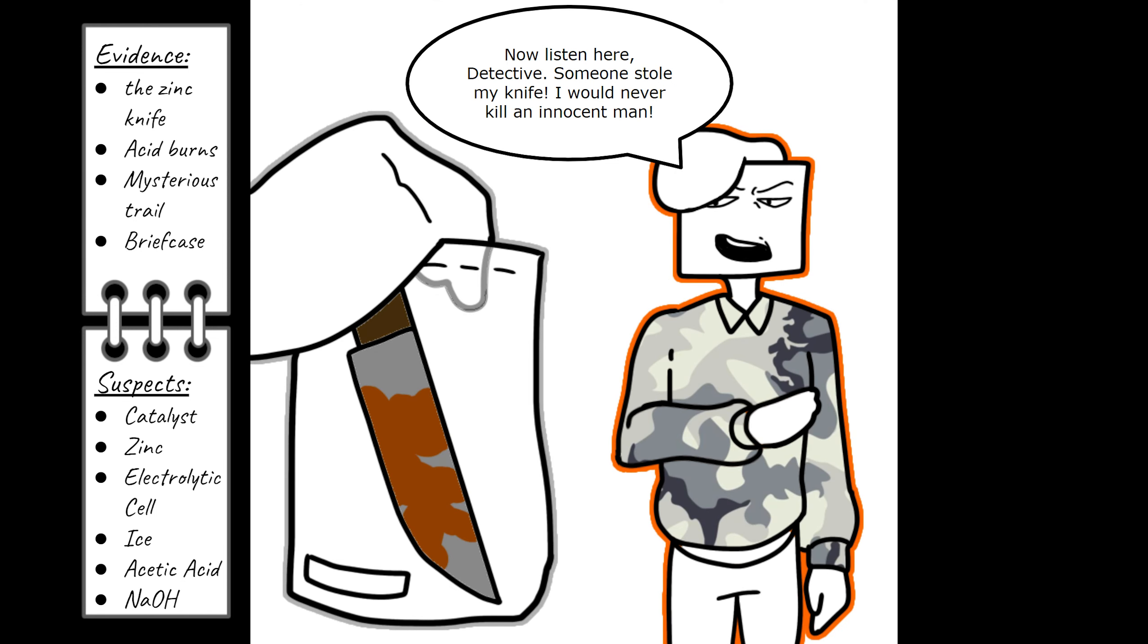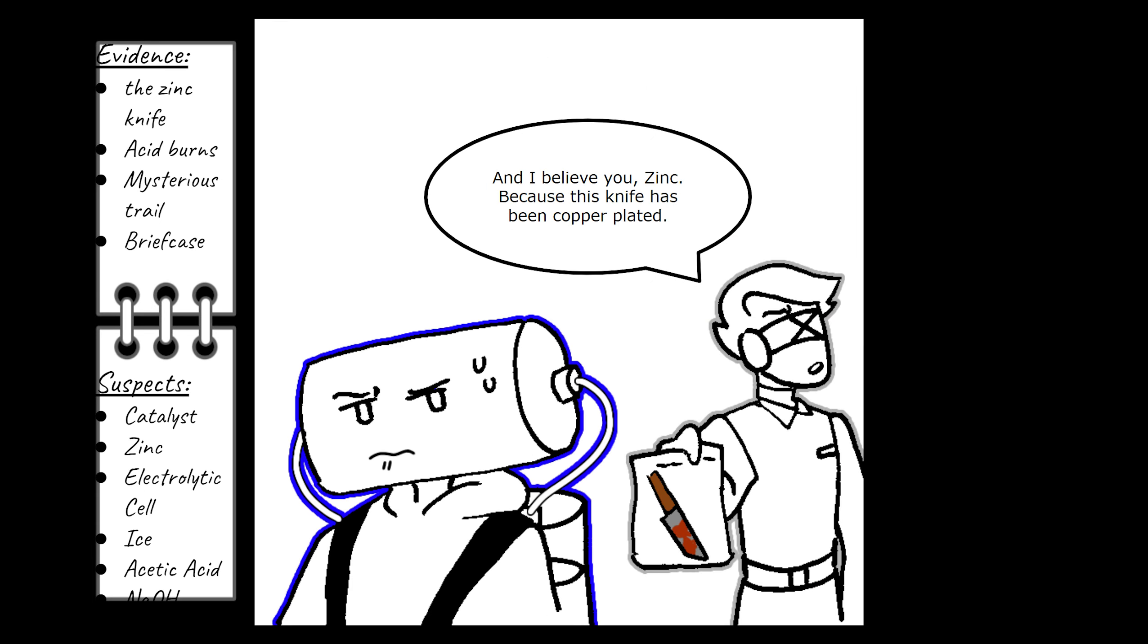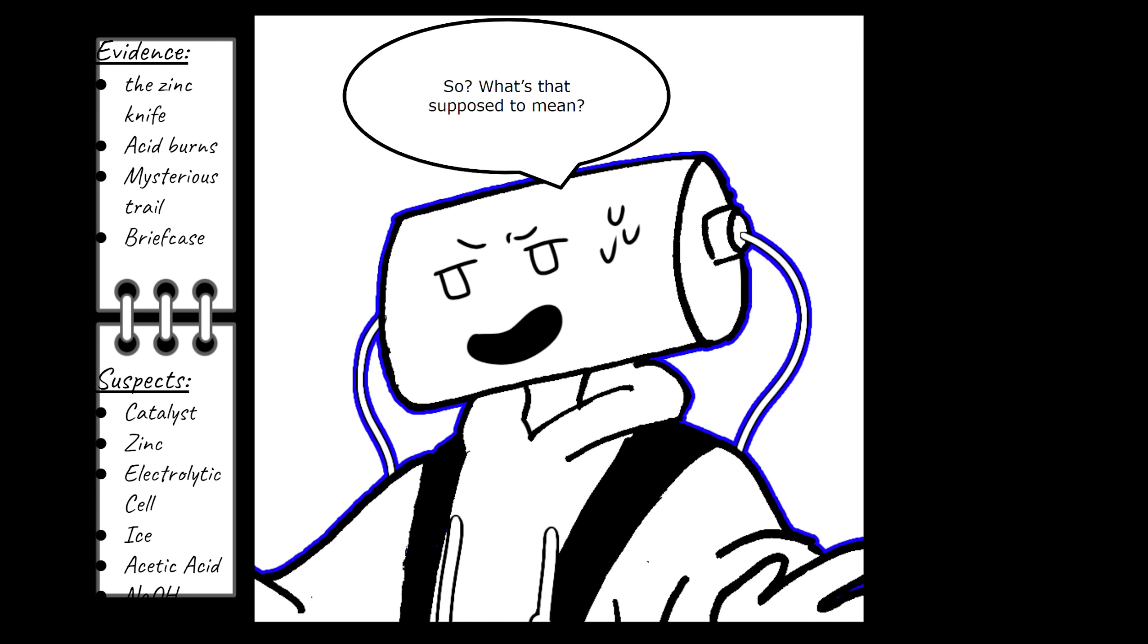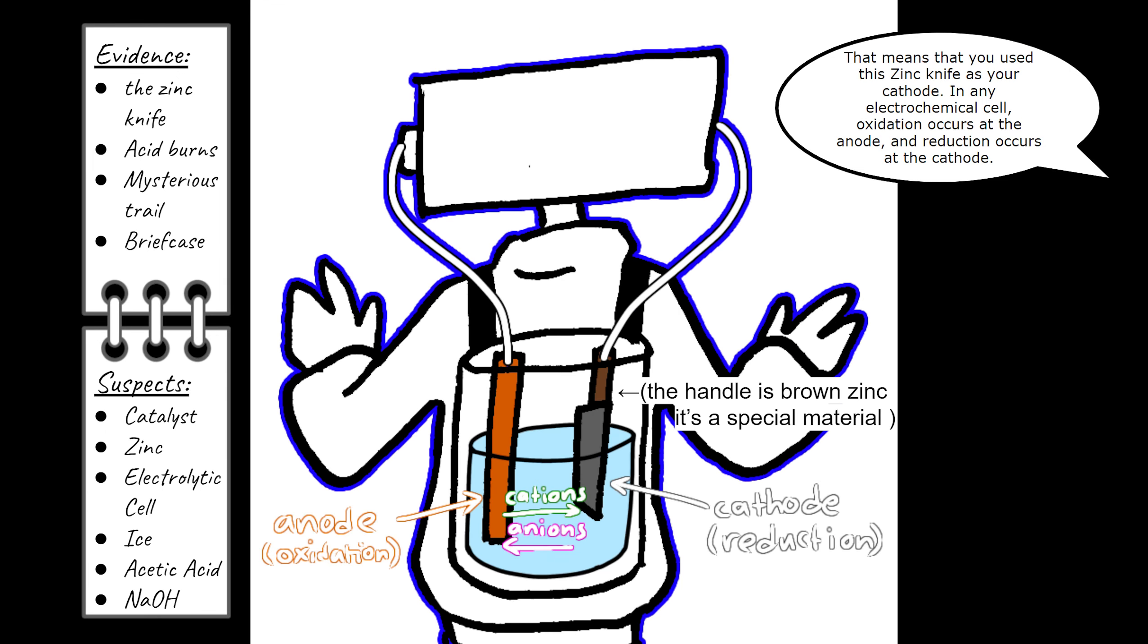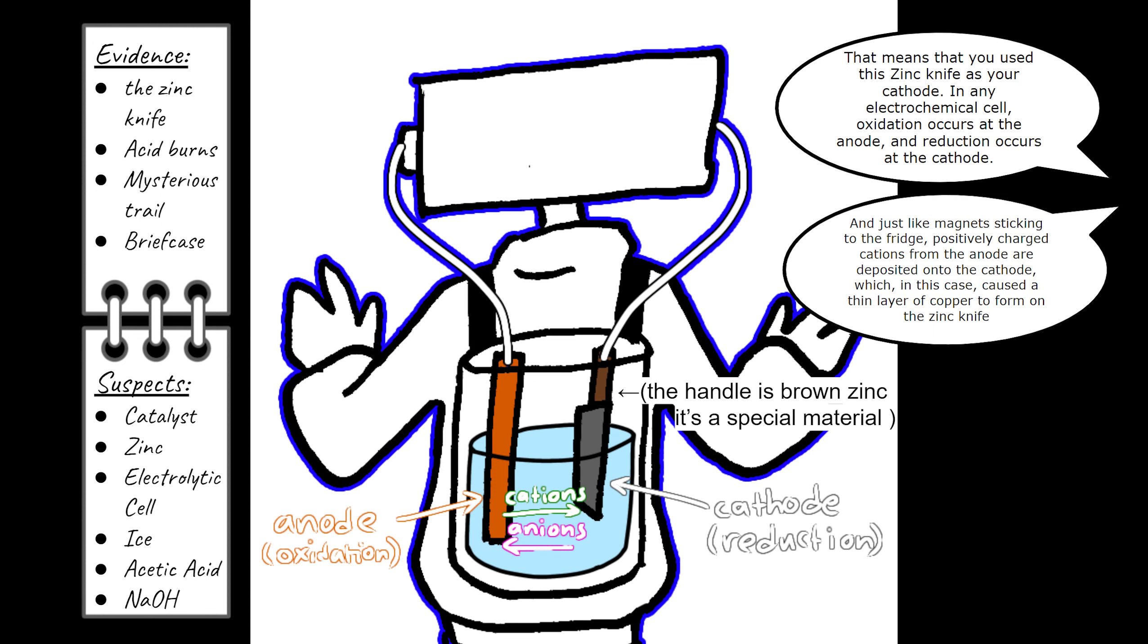He's the bartender for crying out loud. Now listen here, detective. Someone stole my knife. I will never kill an innocent man. And I believe you, Zinc, because this knife has been copper-plated. So, what's that supposed to mean? That means that you use this zinc knife as your cathode. In any electrochemical cell, oxidation occurs at the anode and reduction occurs at the cathode. And just like magnets sticking to the fridge, positively charged cations from the anode are deposited onto the cathode, which, in this case, caused a thin layer of copper to form on the zinc knife.